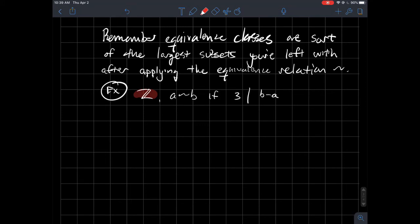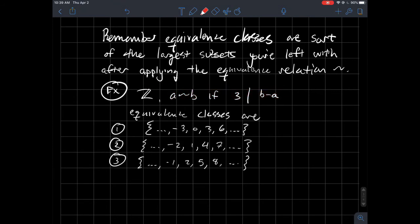remember that one way we could say two integers are equivalent is if maybe three divides their difference, b minus a. So remember this is like the integers mod three, if you've heard of that before. But let's think about what are the equivalence classes on the integers if this is the equivalence relation. Well, you'd get three of them.